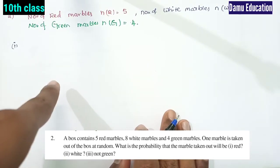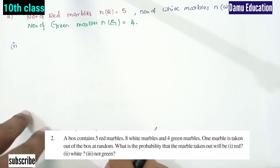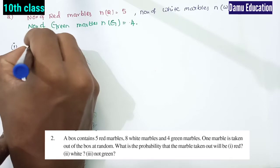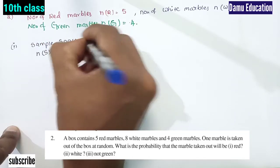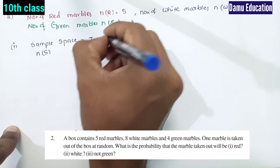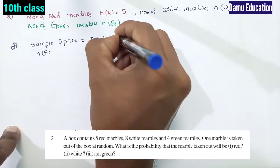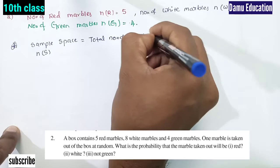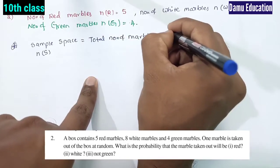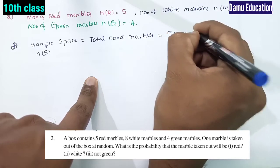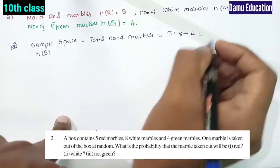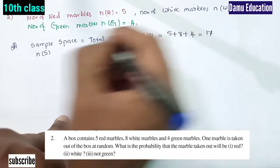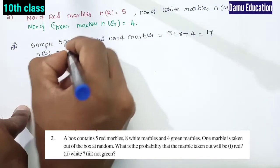One marble is taken out, so we need the total sample space. Sample space means total — n of S — total number of marbles, that will be equal to 5 red, 8 white, and 4 green. So 5 plus 8 will be 13, 13 plus 4 will be 17. So n of S, sample space, is 17.